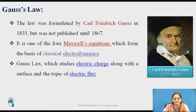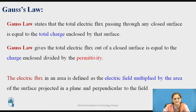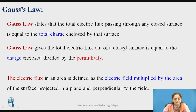Gauss law states that the total electric flux passing through any closed surface is equal to the total charge enclosed by that surface. In short, the total electric flux is nothing but the total charge enclosed by that surface. Gauss law gives the total electric flux out of any closed surface equal to the charge enclosed divided by its permittivity. The electric flux in an area is defined as the electric field multiplied by the area of the surface projected in a plane and perpendicular to the field.